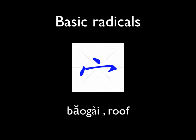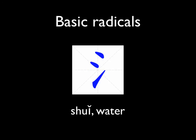This radical means roof. So when you learn the character for house or family, you can see the roof radical in those characters. 水 is the water radical. So when you learn characters for ocean, beach, sea, and river, you will see this radical. Really, a radical is kind of like a category to put different characters into one group, and they all relate to one meaning.